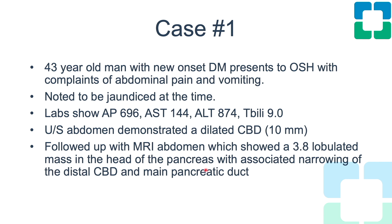I'd like to start with a case presentation. This is a 43-year-old man with new onset diabetes who presented with severe abdominal pain and vomiting. He was notably jaundiced. Labs showed elevated alkaline phosphatase, elevated LFTs including markedly elevated total and direct bilirubin. Ultrasound showed a dilated common bile duct. Follow-up MRI demonstrated a 3.8-centimeter pancreatic head mass with narrowing of the distal common bile duct and the pancreatic duct — very concerning clinical and imaging findings.